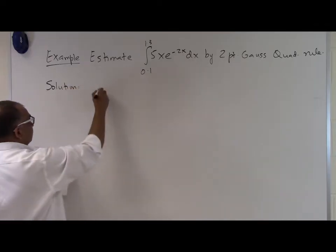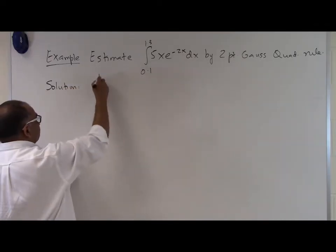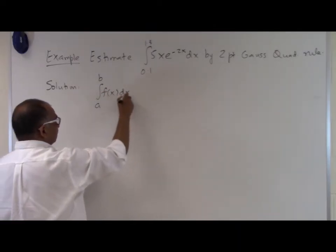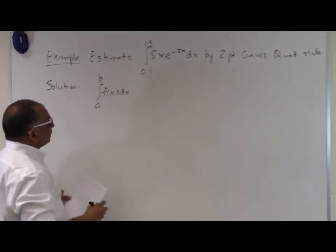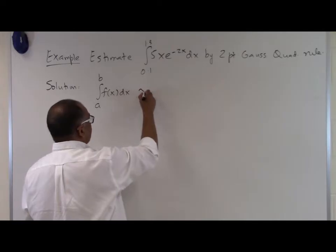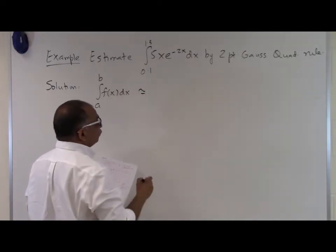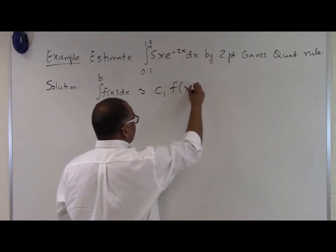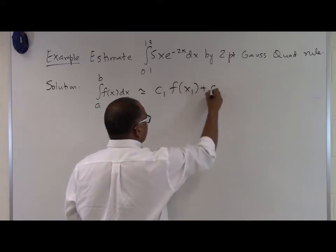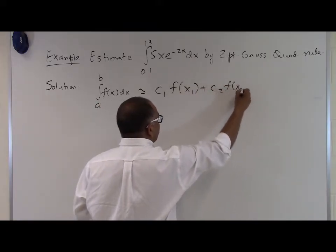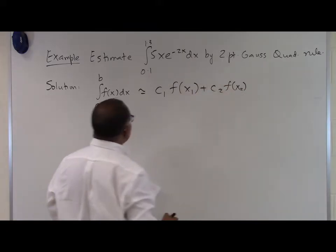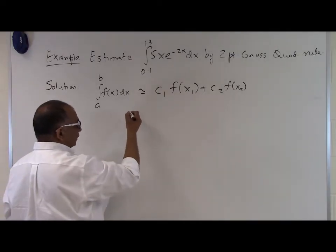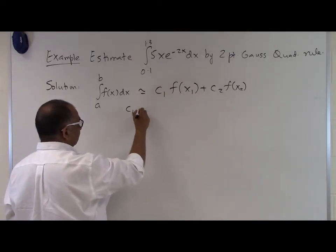We already know that if we have a definite integral from a to b of f(x) dx, it is approximated by the two-point Gaussian quadrature rule as c1 times f(x1) plus c2 times f(x2), where the values of c1, x1, c2, and x2 are given in terms of a and b.